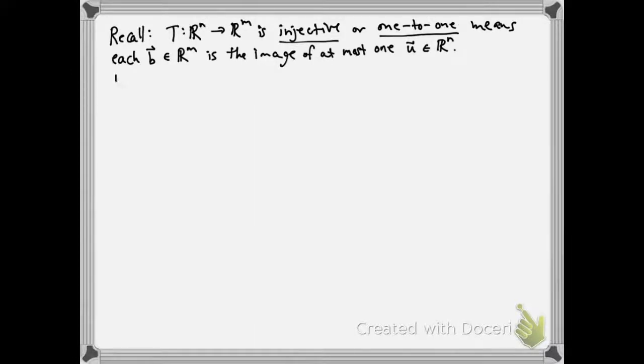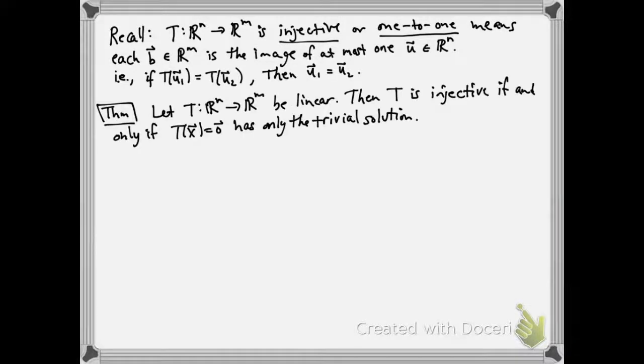Okay. So let's go through a theorem. Suppose I have a linear transformation from R^n to R^m. Then this map T is injective if and only if T of X equals zero has only the trivial solution.